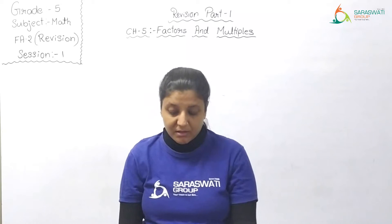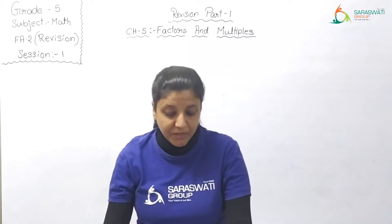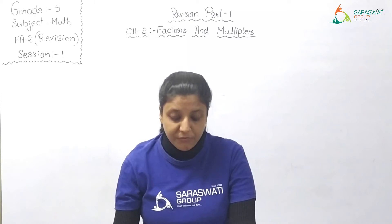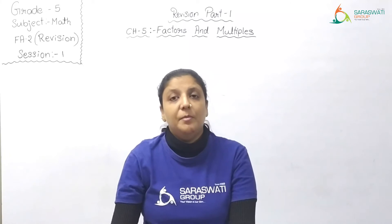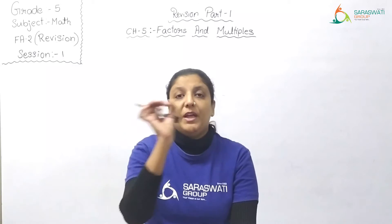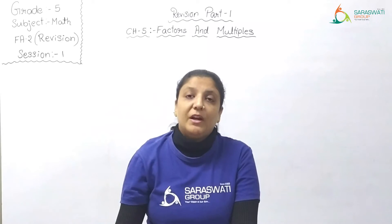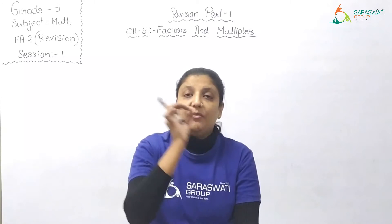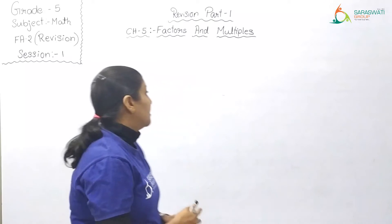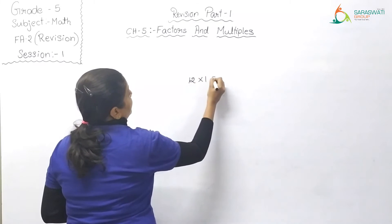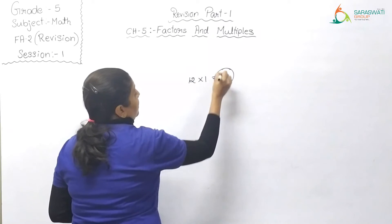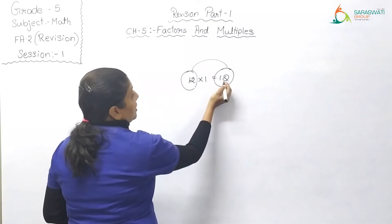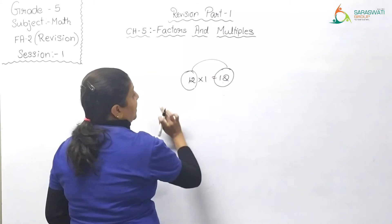Next we will discuss the properties of factors. Every number is a factor of itself — for example, 12 is a factor of 12, because 12 × 1 = 12. So every number is a factor of itself. Also, every number is a multiple of itself — 12 is in its own table, so every number is a multiple of itself.